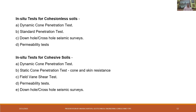For in-situ tests: for cohesionless soils, dynamic cone penetration test, standard penetration test, downhole and crosshole seismic surveys, and permeability tests are used. For cohesive soils, many are common with cohesionless soils, but additionally static cone penetration test with cone and skin resistance, and field vane shear test should be done. Permeability tests can be done for both cohesionless and cohesive soils. Downhole and crosshole seismic surveys are common for both.